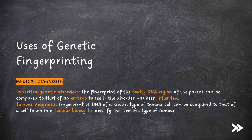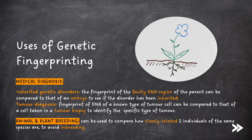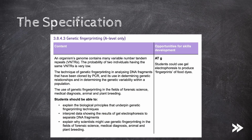And finally, genetic fingerprints can be used in animal and plant breeding. They can be used to compare how closely related two individuals of the same species are to avoid inbreeding. That covers genetic fingerprinting — we have covered VNTRs, as well as how genetic fingerprinting works, and its use in determining genetic relationships and in determining the genetic variability within a population, as well as the use of genetic fingerprinting in the fields of forensic science, medical diagnosis, and animal and plant breeding.